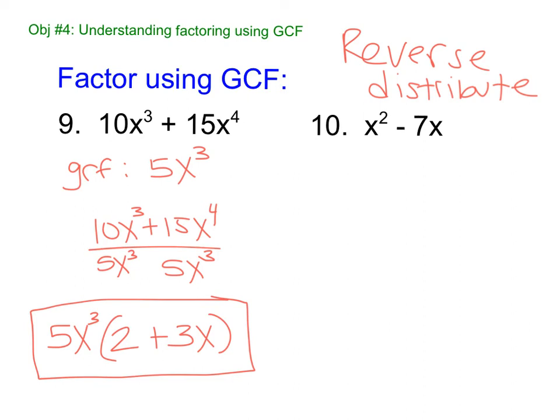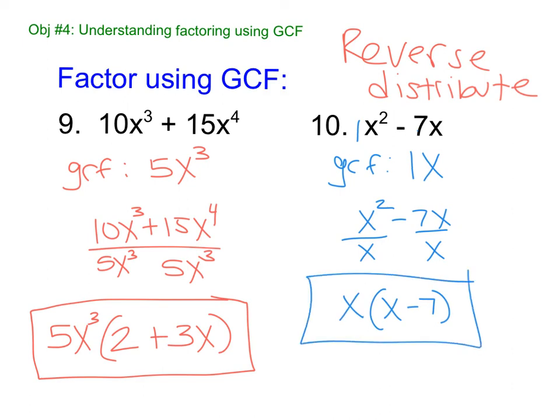All right, next one. What would be the GCF of X and X squared minus 7X? What do you think the GCF is? Well, so 7 is, there's a 1 here. So it's 1X. So we're going to take X squared minus 7X. We're going to divide by our 1X. That leaves me with X minus 7, parentheses, and put our GCF on the outside. Done.